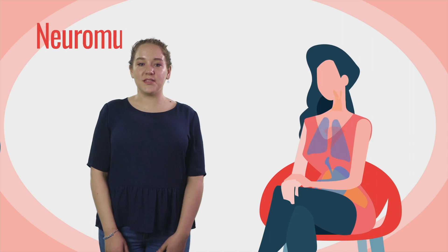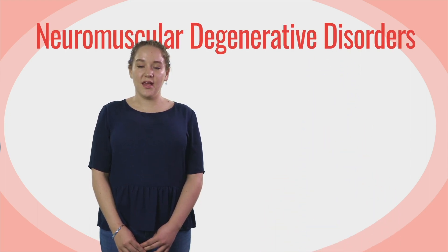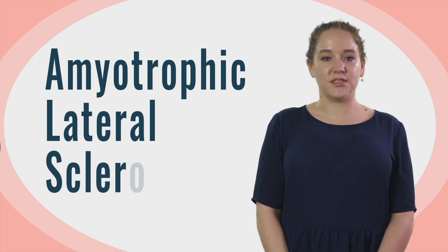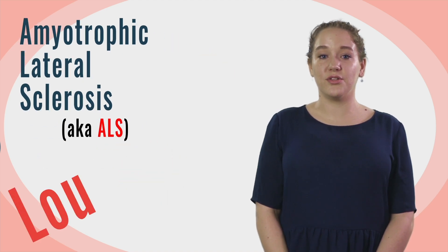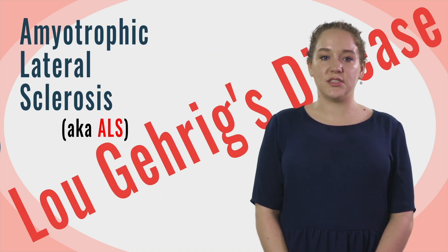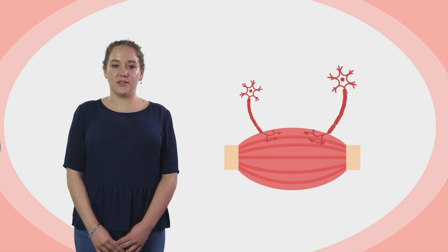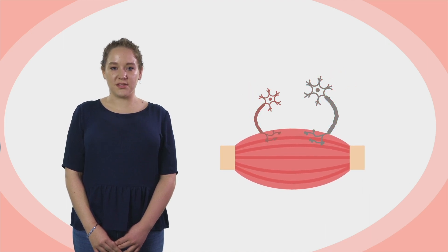This is why neuromuscular degenerative disorders are so devastating. Amyotrophic lateral sclerosis, also known as ALS or Lou Gehrig's disease, is one such disorder. It destroys nerve cells, which then can no longer innervate muscles, resulting in muscular death. Eventually, those muscles that are essential for life will die.